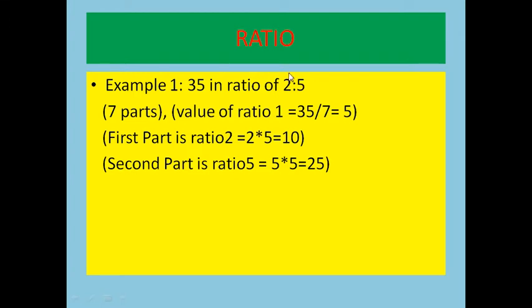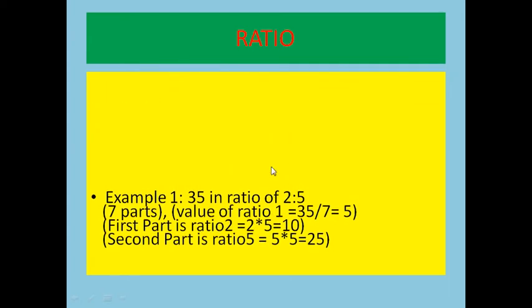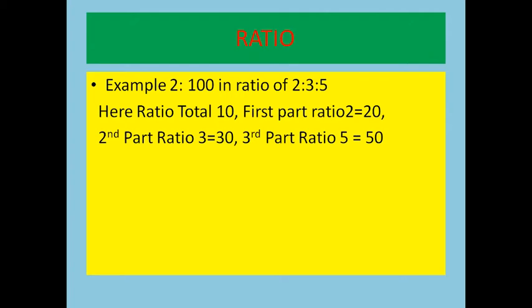So the first part, ratio 2, equals 10 — because the value of ratio 1 is 5. The second part, ratio 5, equals 25 — again because the value of ratio 1 is 5. That covers the 7 parts for this question. Moving to the next question.